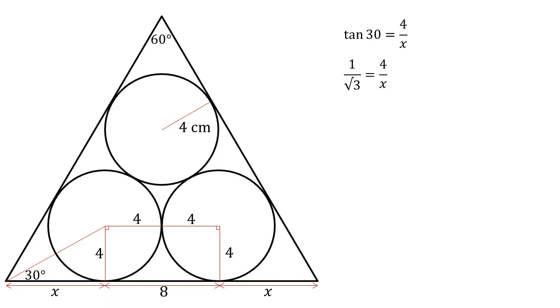Tan of 30 is one over root three. So by cross multiplication, multiplying both sides by x and both sides by root three, we get that x is equal to four root three.